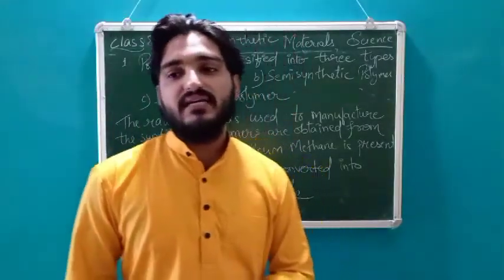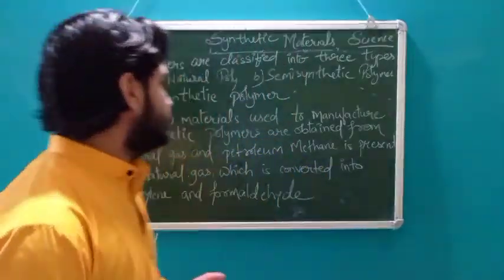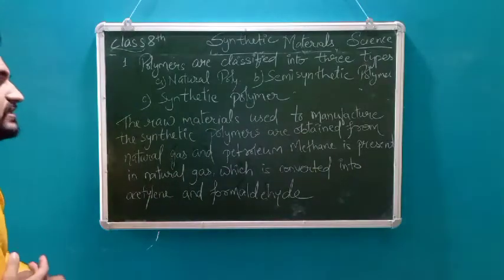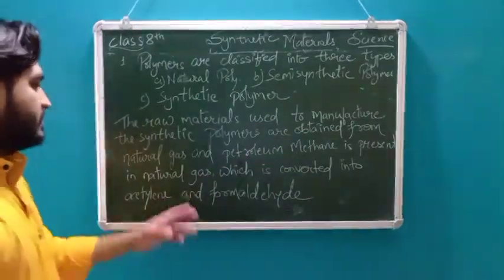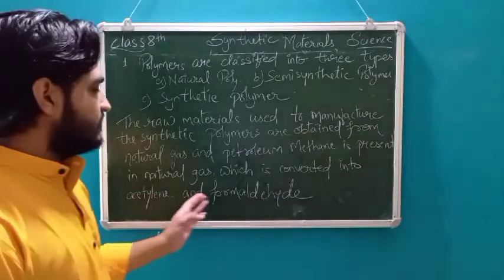So this is the important part of how it is made. We have learned how it is made from natural gas and petroleum. So what do we make? Methane. Methane is converted into acetylene and formaldehyde.